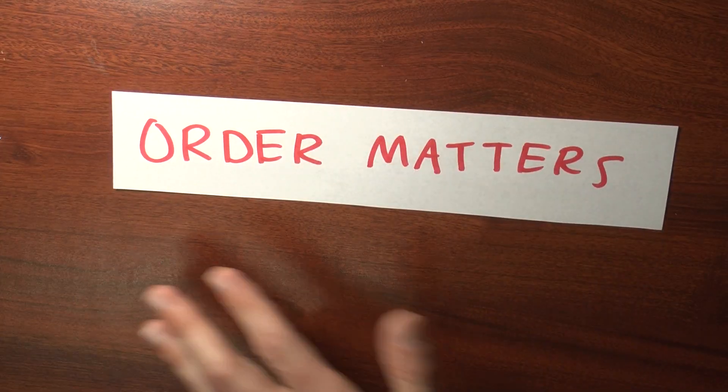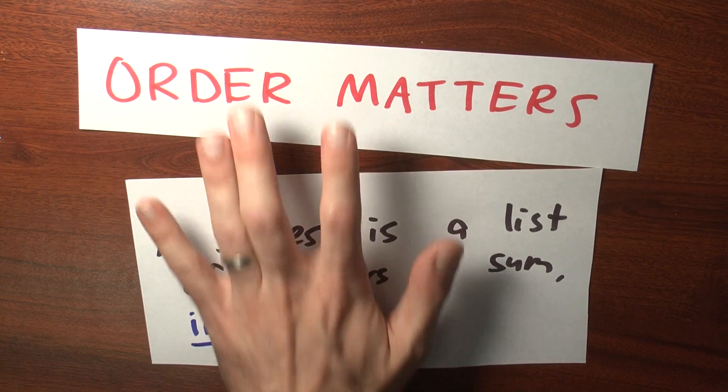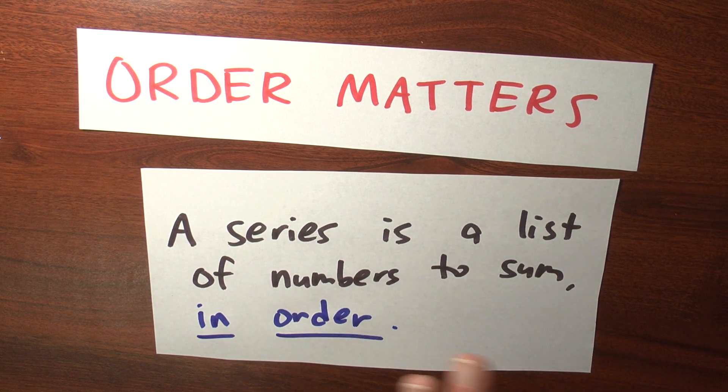In light of this theorem, we have to be careful about how we think about series. Order matters. A series is a list of numbers to sum in a given order. It's not just a pile of numbers that you add up. The numbers are coming at you in a given order.